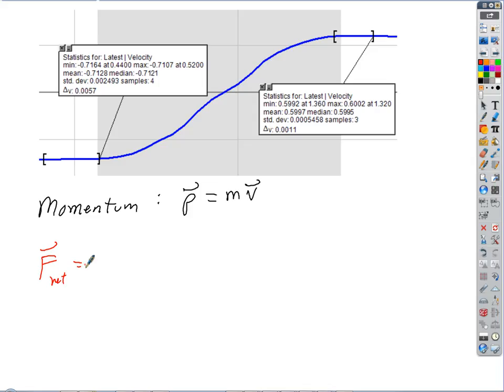Momentum is sort of like that. Obviously, the faster an object goes, the more momentum it has. But also, if you compare a massive object to a light object and they're traveling at the same speed, the massive one has more momentum. Where do we get this from, this idea of momentum?